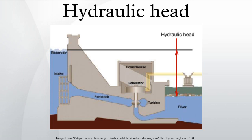Velocity head is due to the bulk motion of the fluid. Elevation head is due to the fluid's weight — the gravitational force acting on a column of fluid. Pressure head is due to the static pressure, the internal molecular motion of a fluid that exerts a force on its container. Resistance head is due to the frictional forces acting against a fluid's motion by the container.